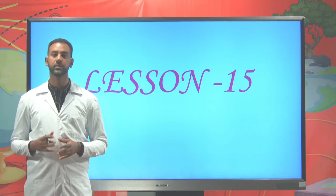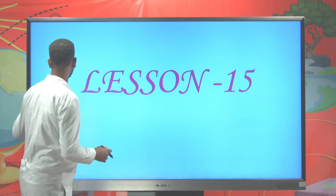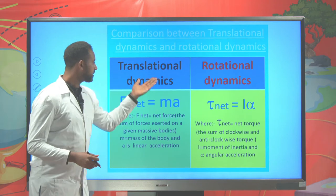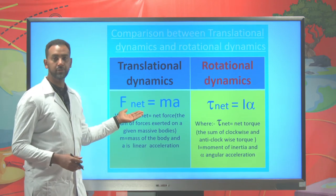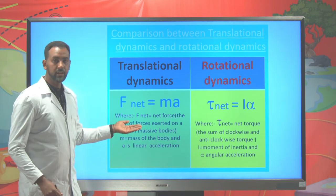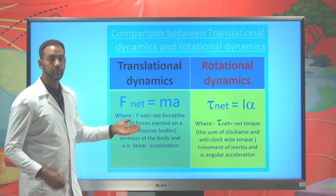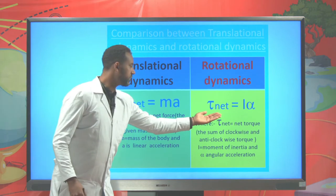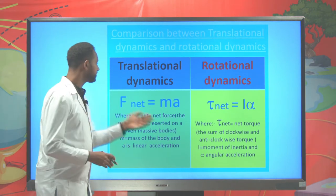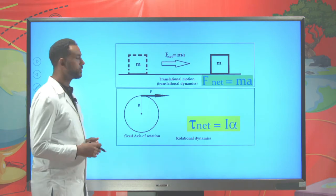Today we will try to proceed and solve some additional problems. Previously we said that in translational dynamics, the net force is equal to mass times acceleration. The equivalent expression for the law of acceleration for rotational motion is net torque equal to I times alpha. Let's proceed and try to solve some problems.